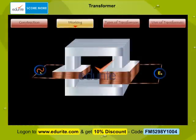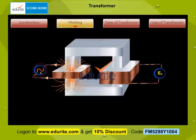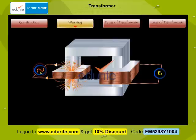Let's now understand the working of a transformer with the help of block diagrams. As the current in the primary varies, the magnetic field linked with the primary coil varies and an EMF is produced due to self-induction.